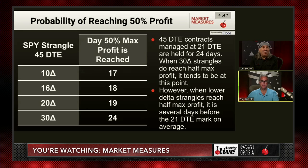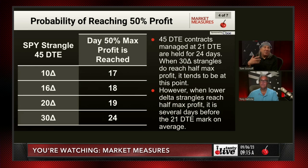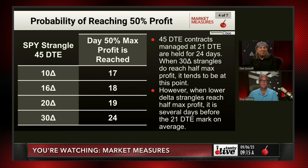The next thing we looked at was the number of days to reach that level. Because we look at these as 45 day strangles, on 10 delta strangles over 18 years, it took on average 17 days to get there. On 16 delta strangles it took 18 days. On 20 delta strangles it took 19 days. To put some context around that: these are 45 days to expiration contracts managed at 21 DTE or held for 24 days. When the 30 delta strangles do reach half max profit, it tends to be at that point. However, the lower delta strangles reach it several days before. So it's another reason for potentially doing lower delta strangles — just to get there faster.